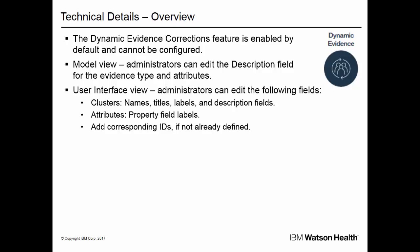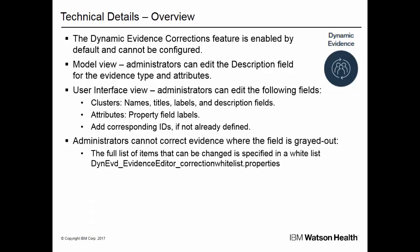Administrators can also edit the attribute properties, such as title, description, and label. When a new text field such as description is added, the ID input field appears. Administrators can enter an ID; however, they cannot edit an ID. An administrator cannot correct evidence where the interface element is grayed out. The full list of items that can be changed is specified in a whitelist file, which is loaded to the app resource table. Note that the online help cannot be edited.